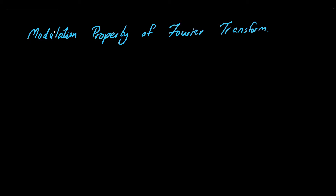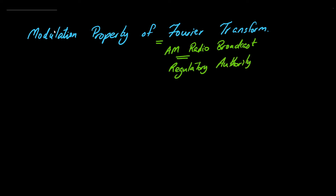In this video, we are going to talk about the modulation property of Fourier transform. We would do so by means of an application of AM — that is, amplitude modulated signal — in AM radio broadcast. There is a regulatory authority that has some available spectrum from 560 kHz to 1600 kHz. This is the spectrum of AM radio signals that you receive in your vehicles or in radio devices.